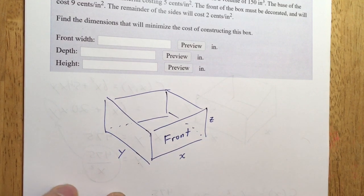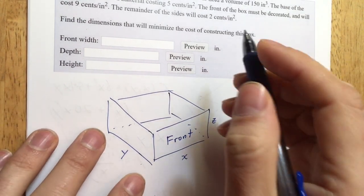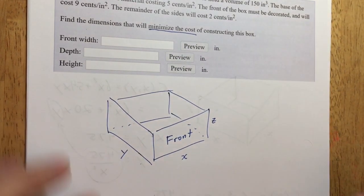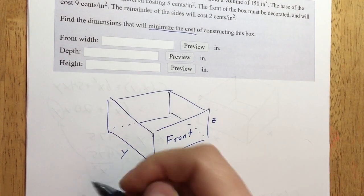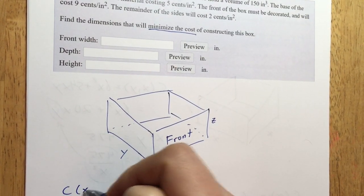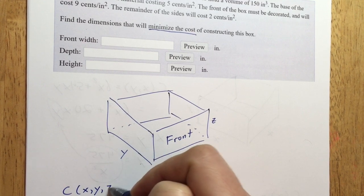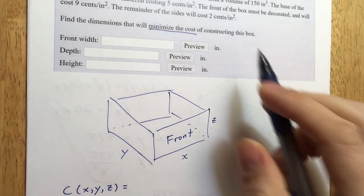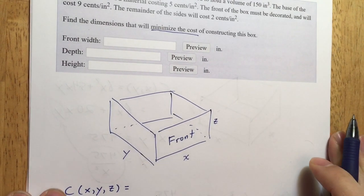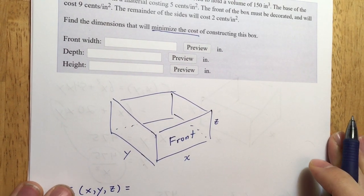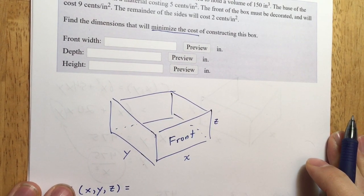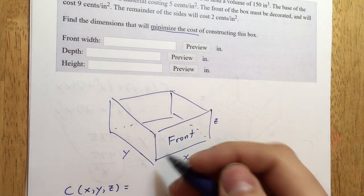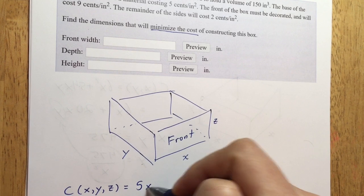What we want to do is minimize the cost. Let's write down what the cost is. The cost is going to depend on the size of the box, so it depends on X, Y, and Z. The base of the box costs 5 cents per square inch, and the area of the base is XY, so the cost of the base is 5XY.